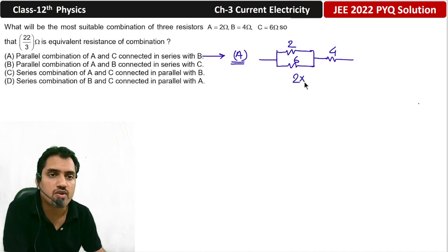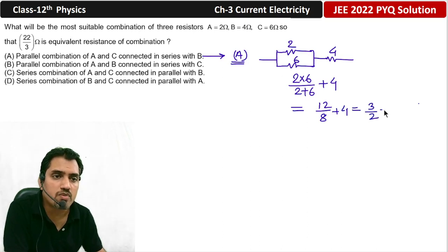What is the parallel combination? 2 into 6 divided by 2 plus 6 plus 4. So, let's see, this will be 12 divided by 8 plus 4, which means 3 by 2 plus 4. So, this will be 8 plus 3, that is 11 by 2.